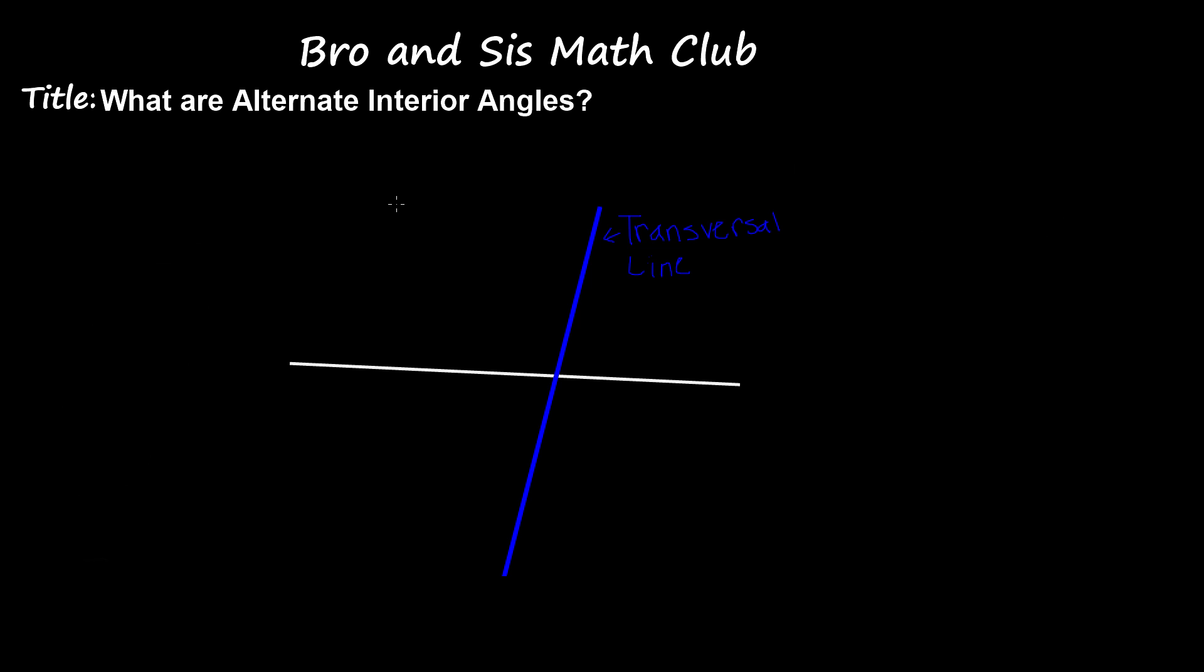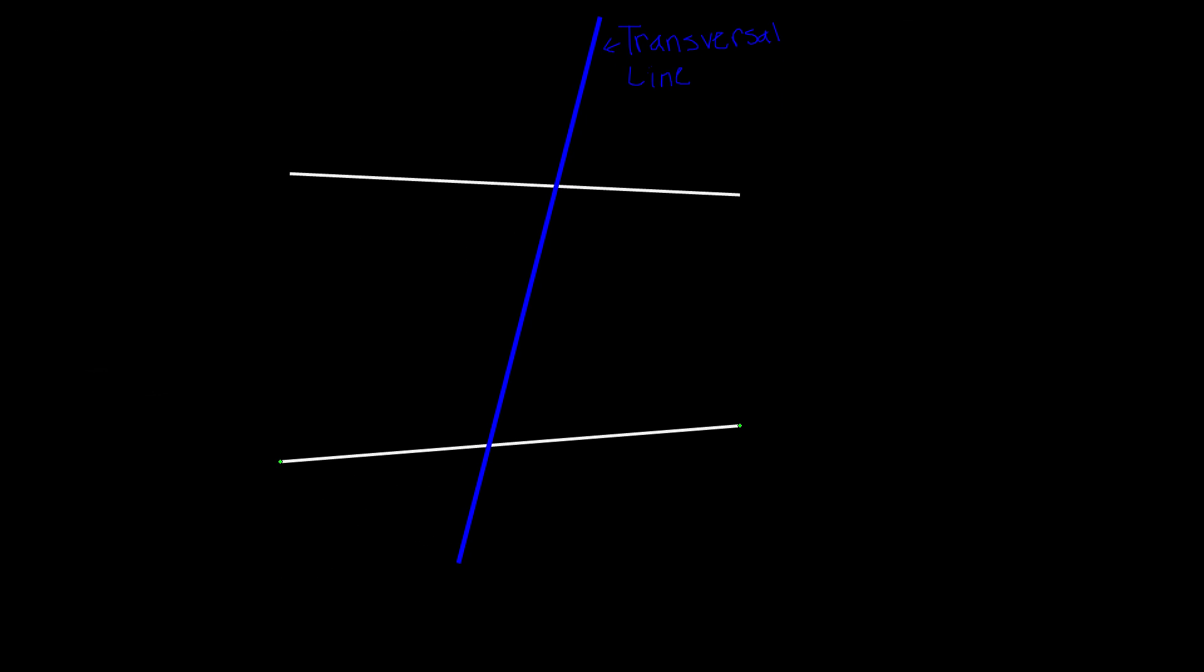Alternate interior angles are angles that are the opposite angles on the inside of the two lines that are being crossed by a transversal line. So what I mean by that is, here we have a transversal line, which is the blue line, and it is crossing over two lines. And the alternate interior angles would be the angles that are opposite and they're inside the two lines.